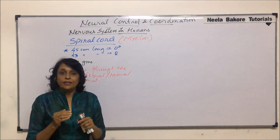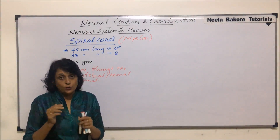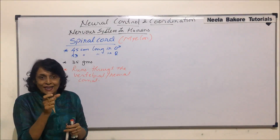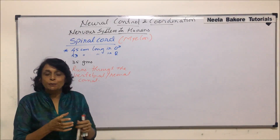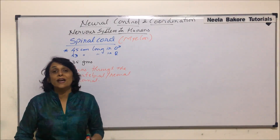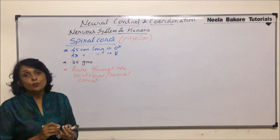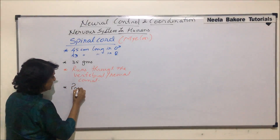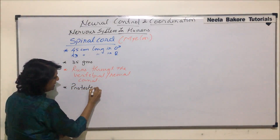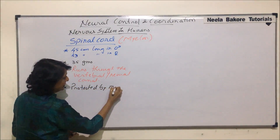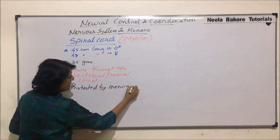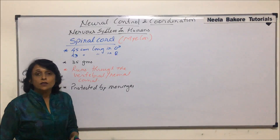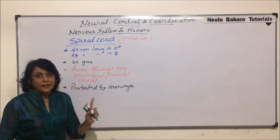Now, protection. The spinal cord is protected by two things. One is the vertebral column, because it is running through that canal, so it is surrounded by the bony part of the vertebrae. It is also protected by meninges.